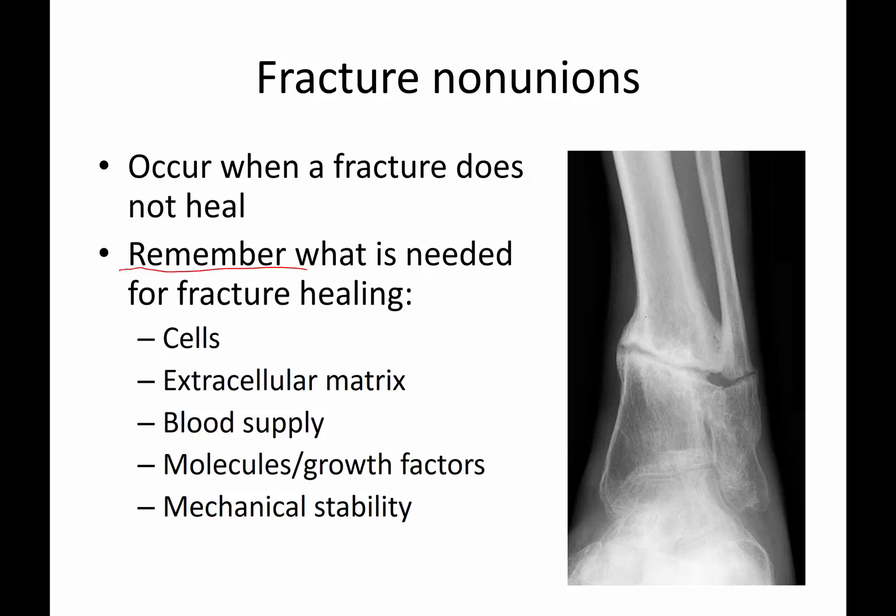What's needed for fracture healing? What's needed are cells that can make bone, an extracellular matrix for the cells to sit in, a blood supply to help bring the molecules and growth factors needed for bone to grow, and some type of stability — an environment where the bone can set up and bridge a gap.